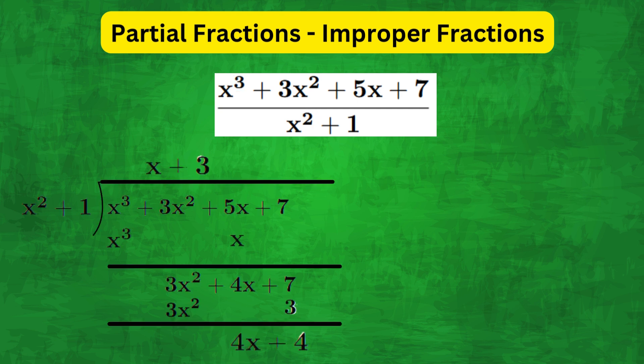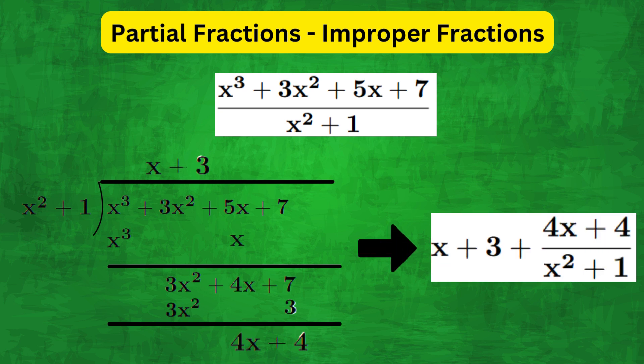The division can be carried out as follows, and this leads to the quotient plus remainder over divisor form given here. And this naturally comes out in the partial fraction form.